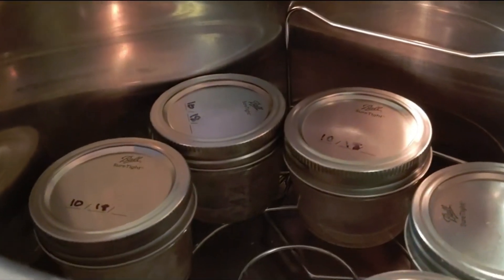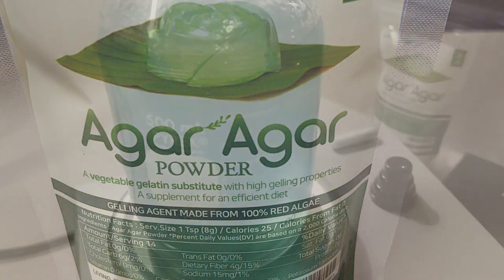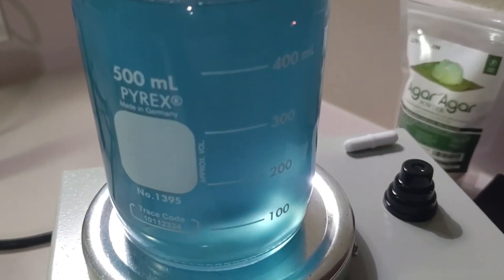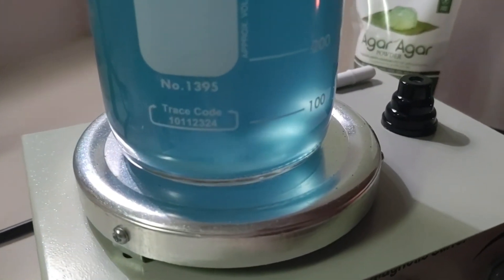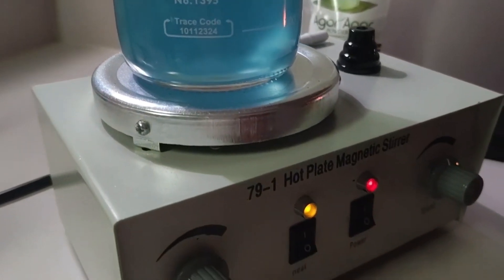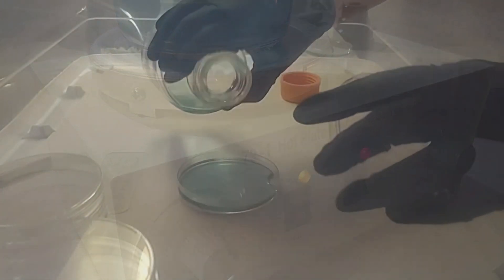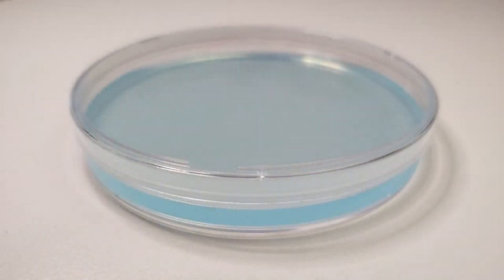Our recipe uses 10 grams of agar for 500 milliliters of boiling purified water, or you can use 5 grams of agar for 250 milliliters of water. The size of your plate and how full you fill your plates will determine how many dishes you will create.